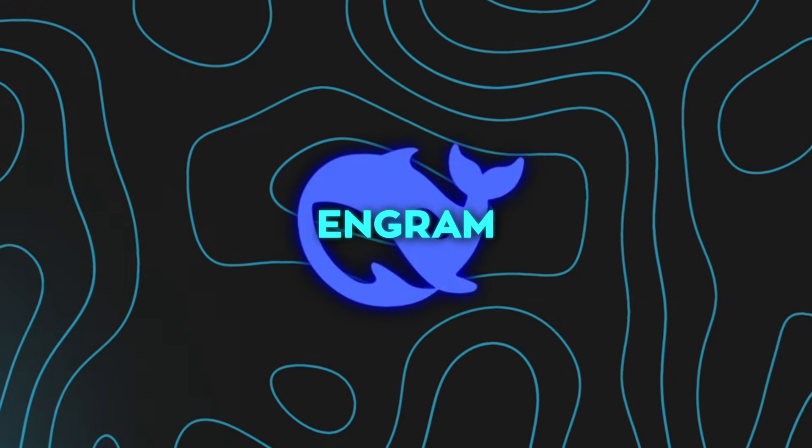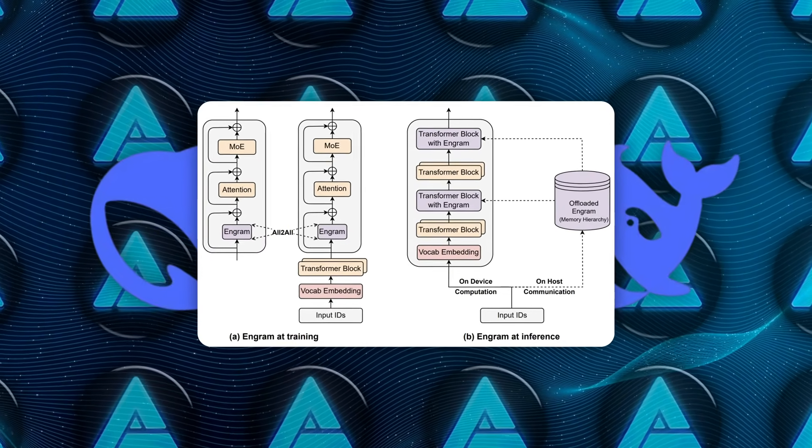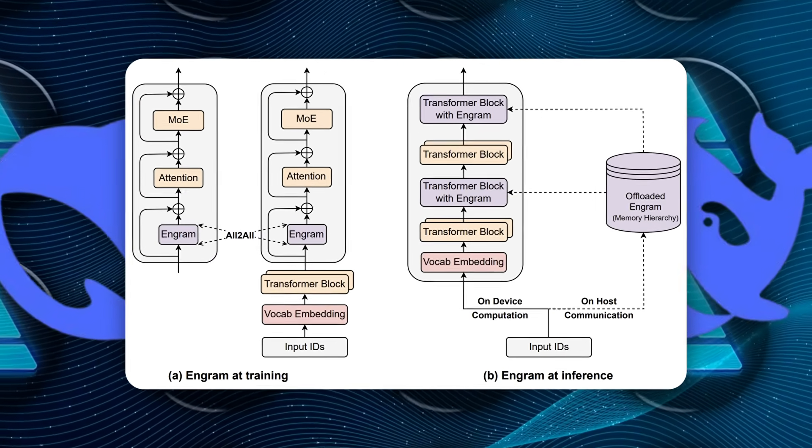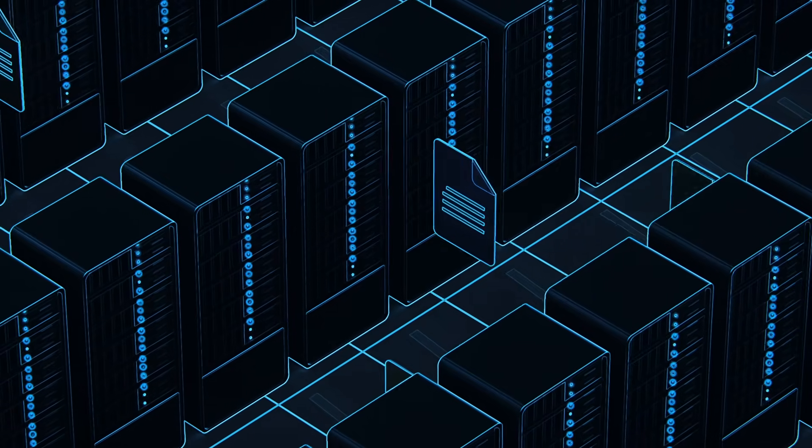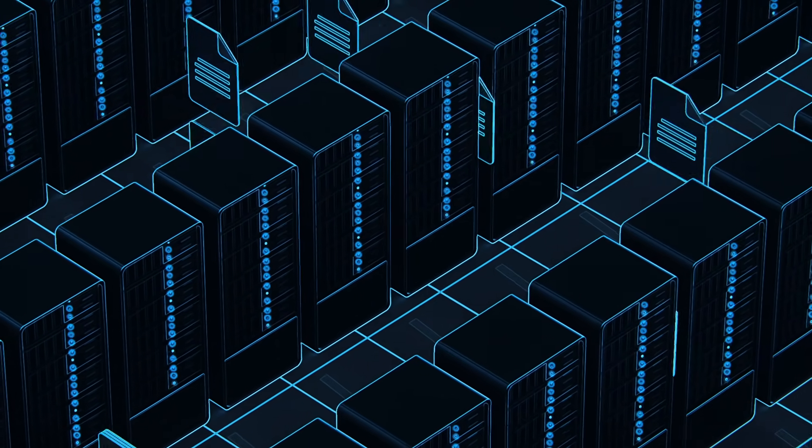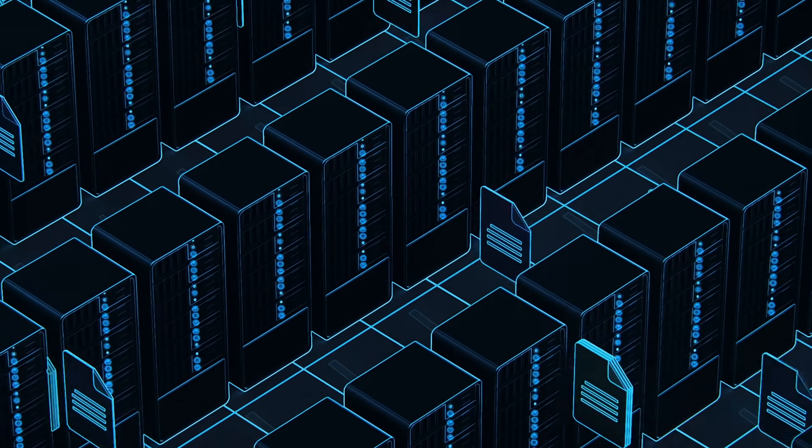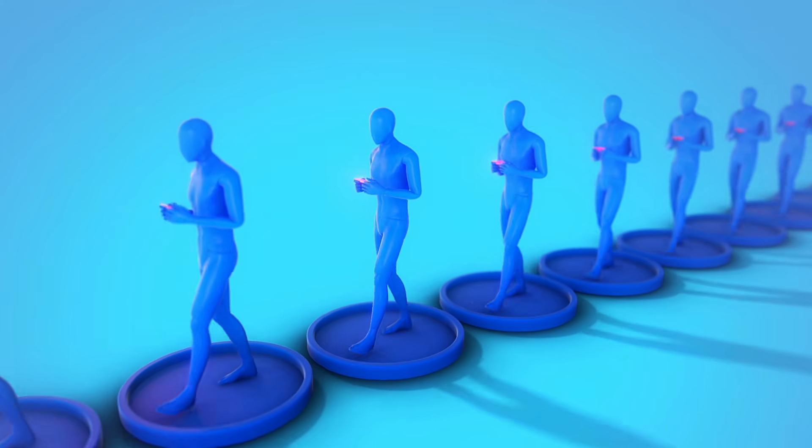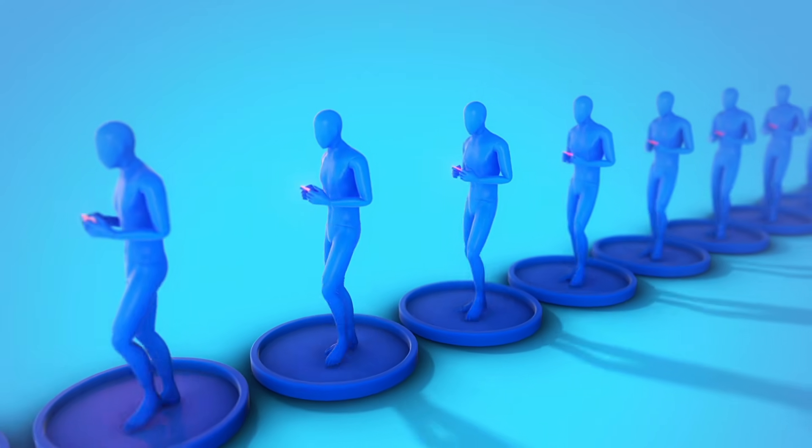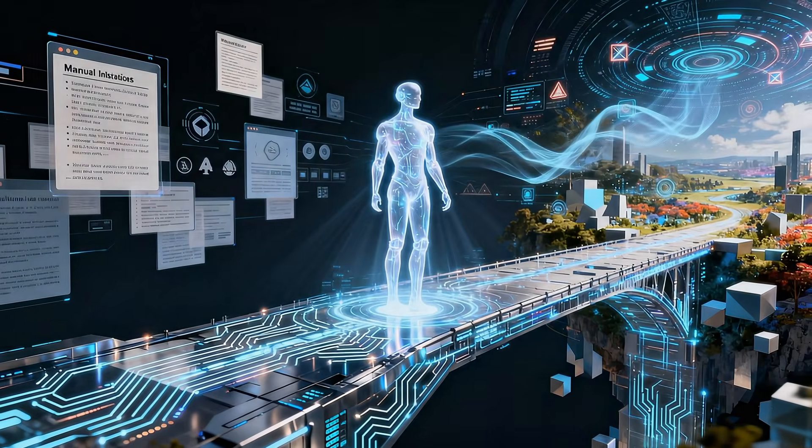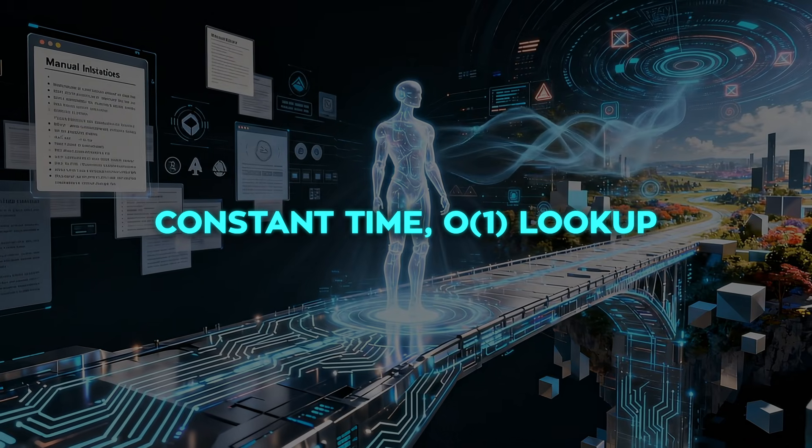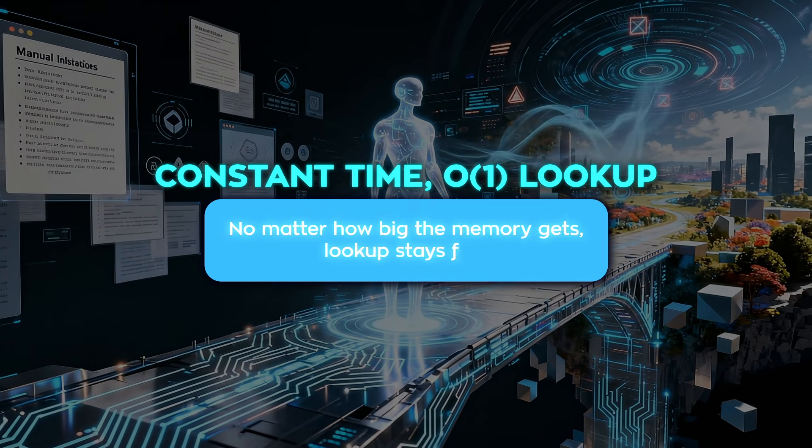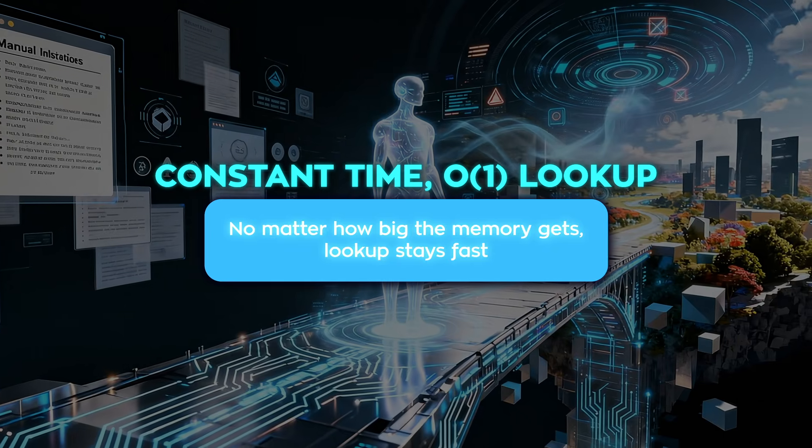And the way they do this is actually clever. Because obviously, you can't store every possible phrase directly. There are too many combinations. So, they use a trick that's basically like putting patterns into a giant organized warehouse using a hash system. Think of it like this. You have billions of memory slots. Each phrase pattern gets assigned a shelf number. And when the AI sees a phrase, it can instantly jump to that shelf and pull out what it needs. That's why the researchers call it Constant Time O(1) Lookup. Which in normal language means, no matter how big the memory gets, lookup stays fast.